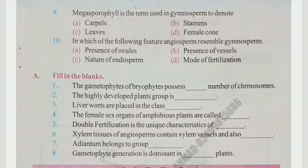Number 9: Megasporophyll is the term used in gymnosperms to denote — carpels, stamen, leaves, or female cone? In gymnosperms, the female cone is called megasporophyll. The right answer is D, female cone.